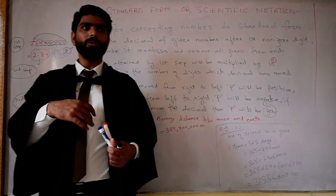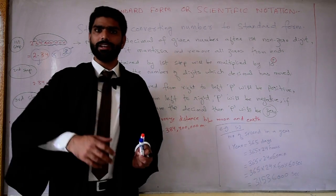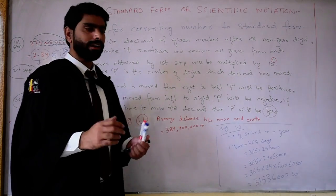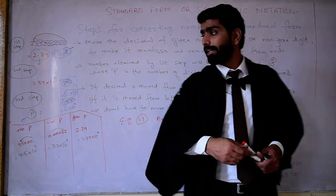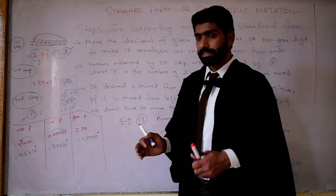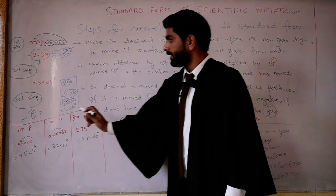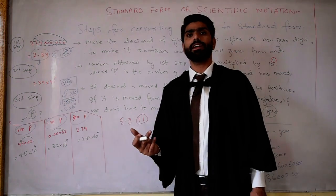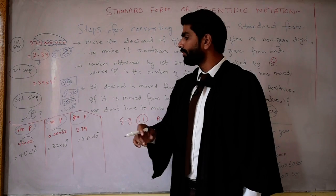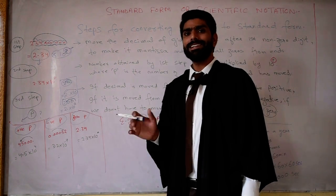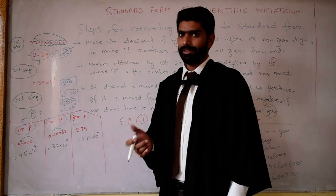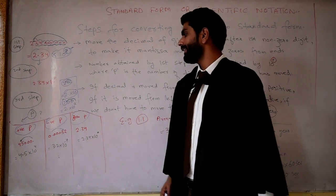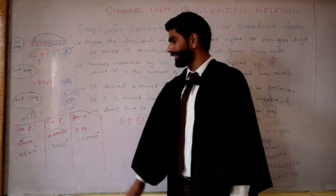If we have to move the decimal from right to left or from left to right, we use either positive or negative power of 10. There are 3 cases related to the sign of the power of 10: it may be positive, it may be negative, and it may be neither positive nor negative, that is 0. Numbers greater than 0 are positive and numbers smaller than 0 are negative, so 0 is neither positive nor negative.